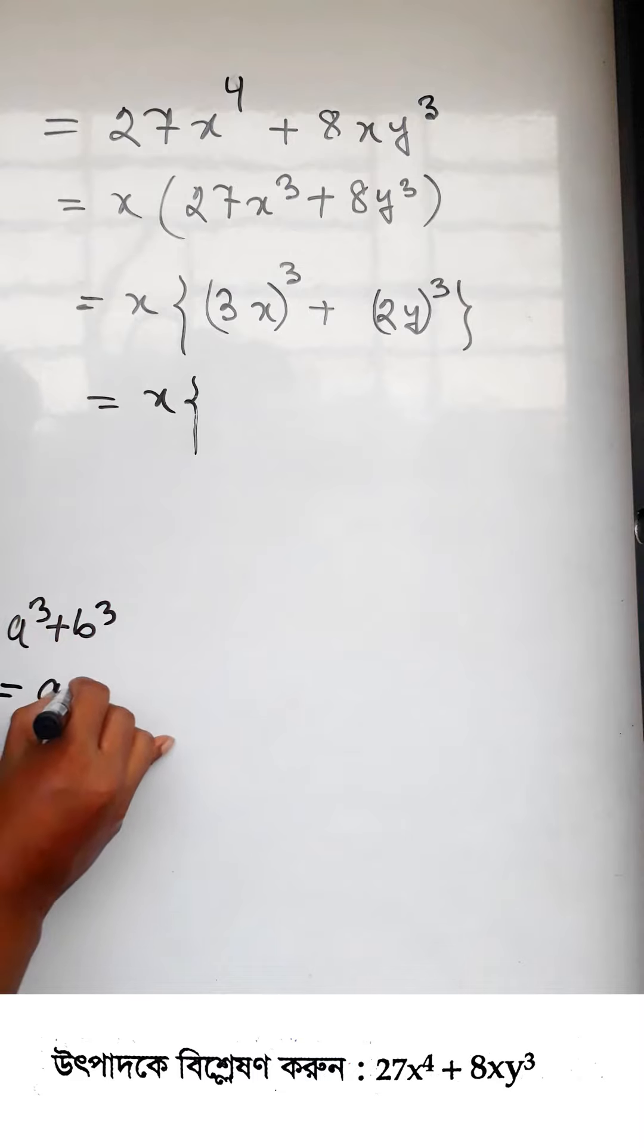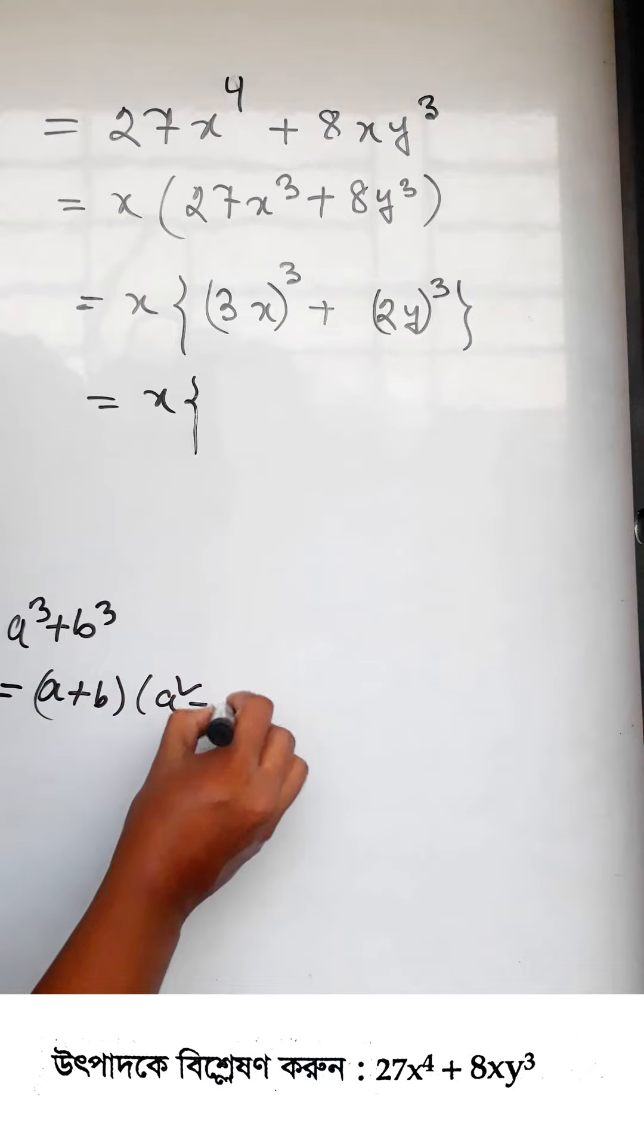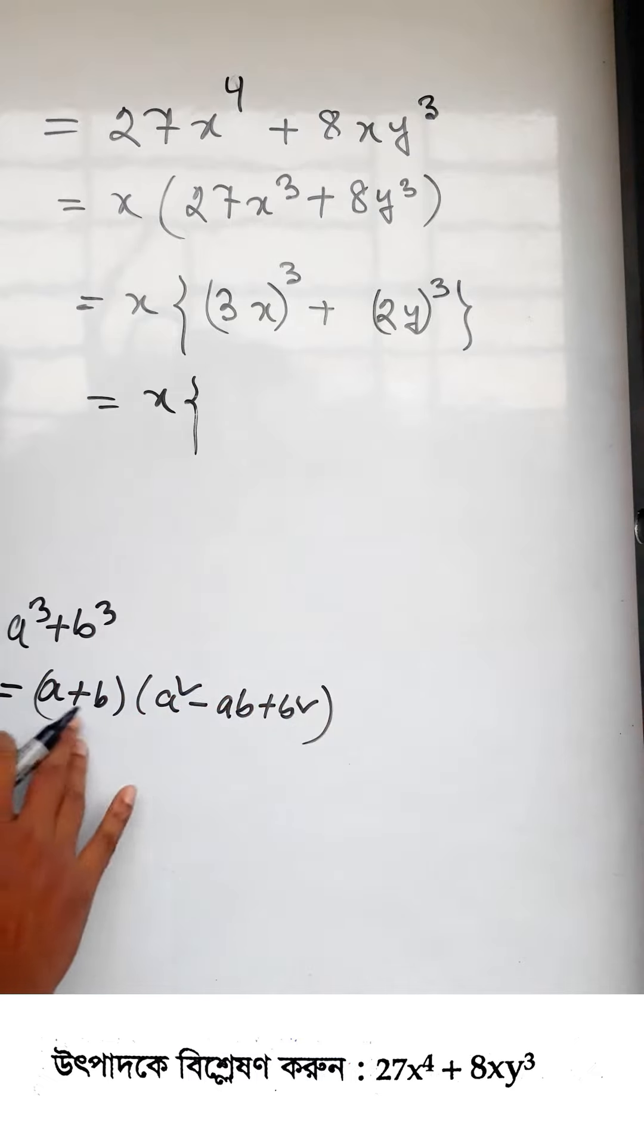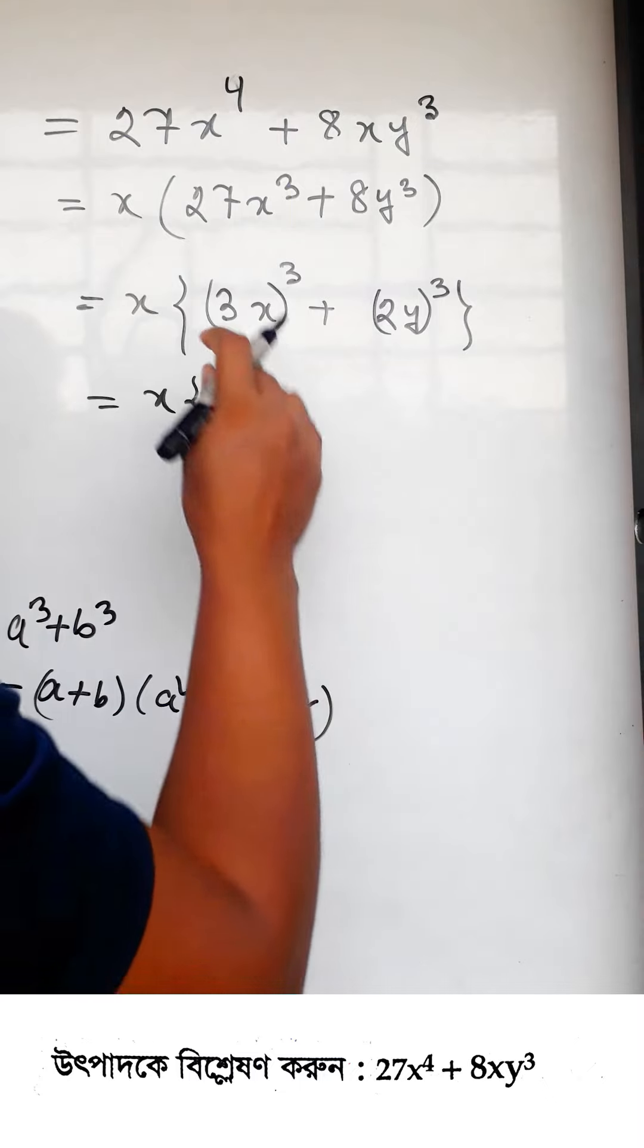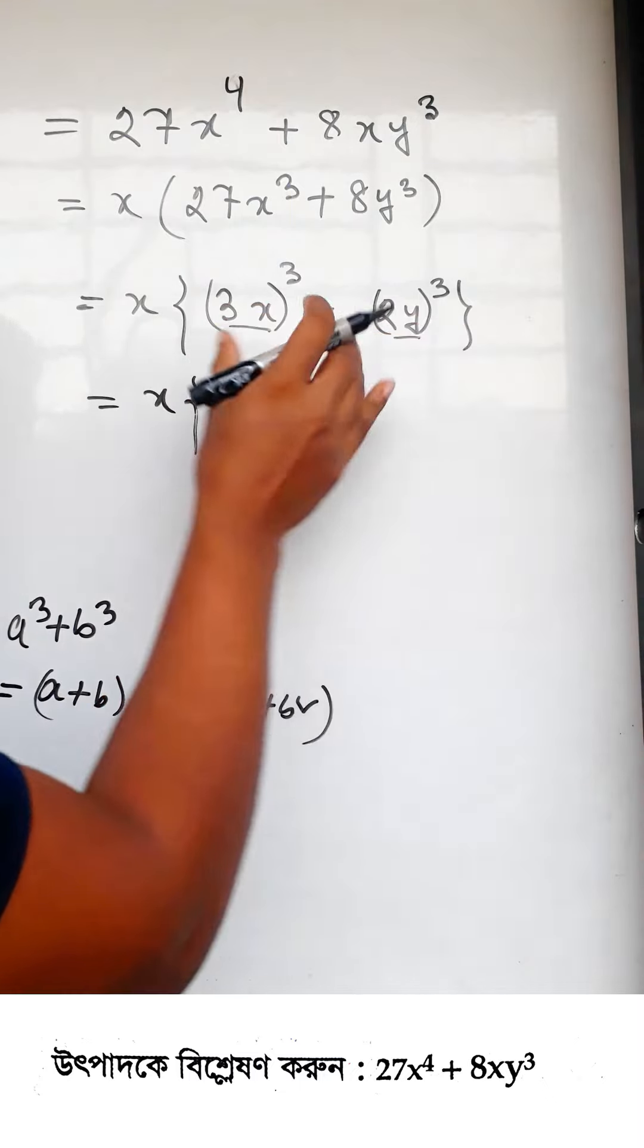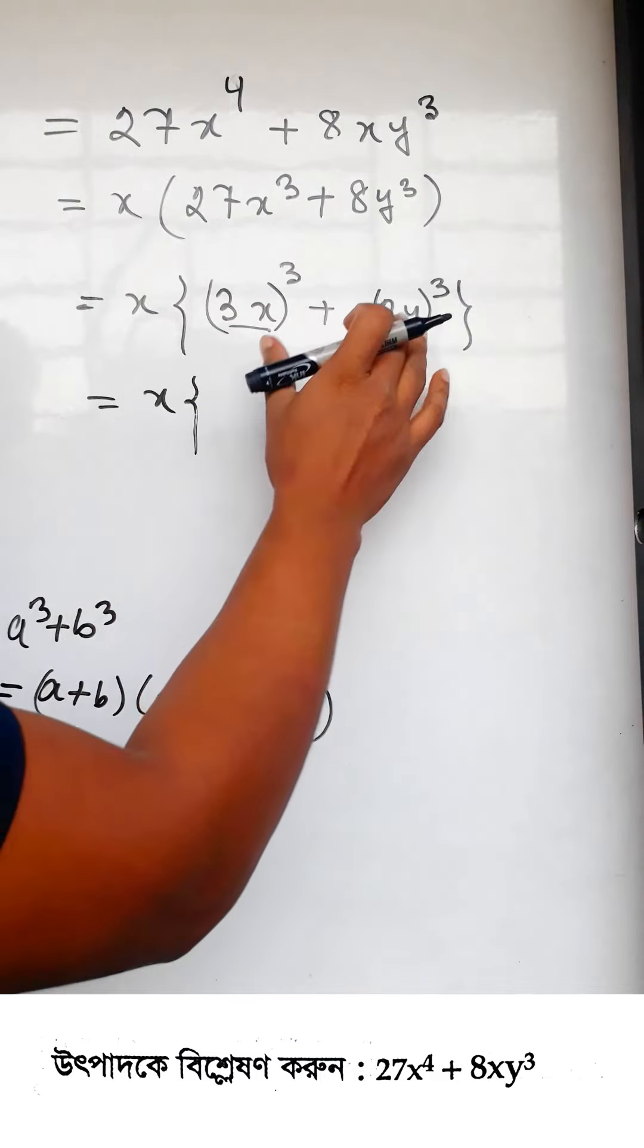The formula for a^3 + b^3 is: (a + b)(a^2 - ab + b^2). This is the sum of cubes factorization formula we'll apply here.